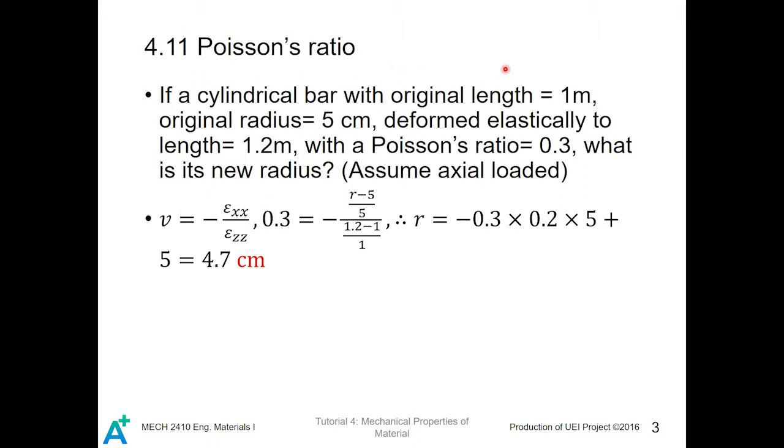If a cylindrical bar with original length equal to 1 meter, original radius equal to 5 cm, deforms elastically to length equal to 1.2 meter, with a Poisson's ratio equal to 0.3, what is its new radius? Assume axially loaded.